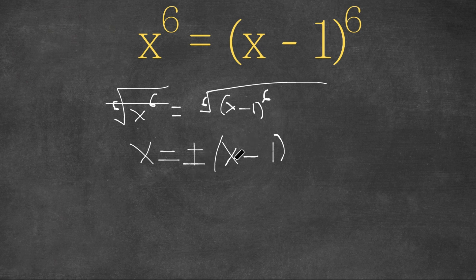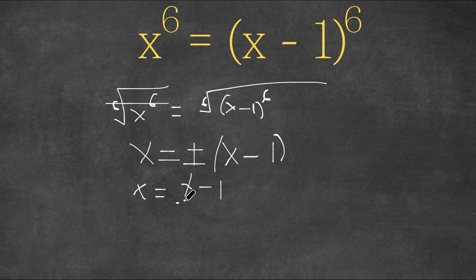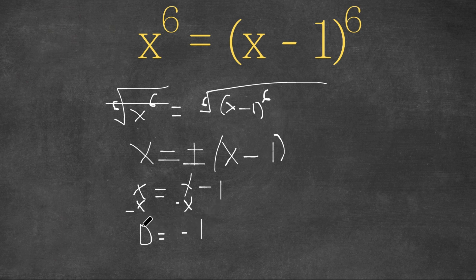Let's first try the positive case: x equals x minus 1. If we subtract x from both sides, we get 0 equals negative 1. This is a false equation, meaning it wouldn't work — x can't equal x minus 1. So we can't use the positive version.